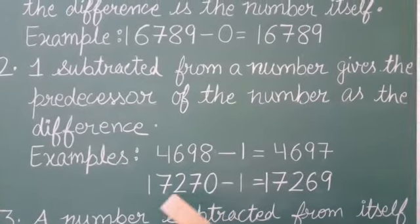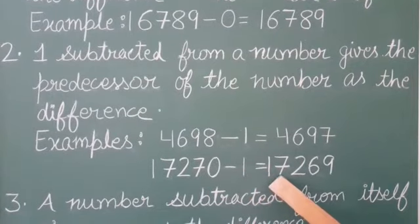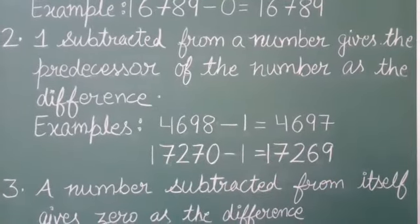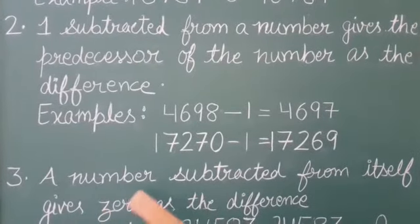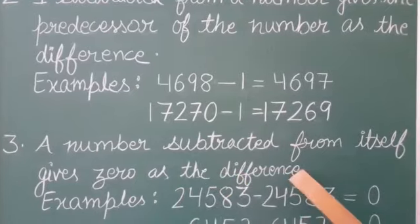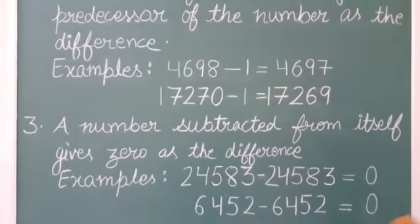Similarly, when we subtract 1 from 17,270, we get the answer 17,269. Third property: a number subtracted from itself gives 0 as the difference. This means when we subtract the same number, we get the answer 0.